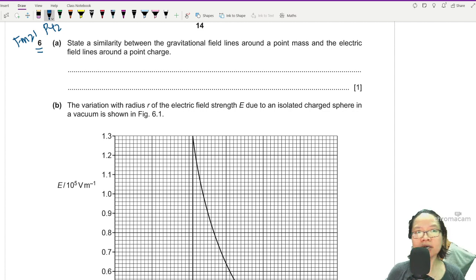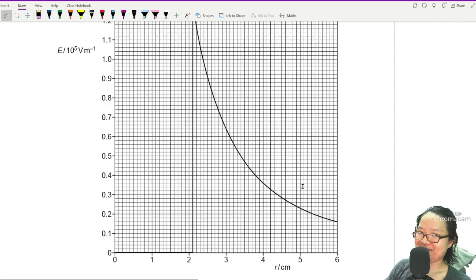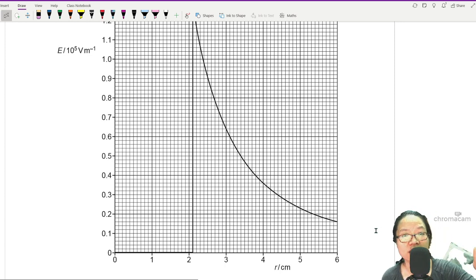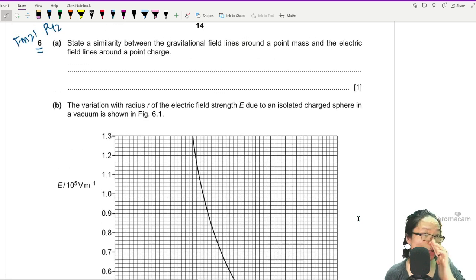Come back again, the video is going to be here. So this question is an electric field question. Whenever I see this kind of graph I'm really happy because it is not two-point charges. When it's not two-point charges it is immediately easy. Okay, so 6a state a similarity and a difference between gravitational field around a point mass and electric field around a point charge.